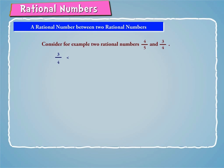We know that 3 by 4 is less than 4 by 5. Now let us take the average of these two numbers.